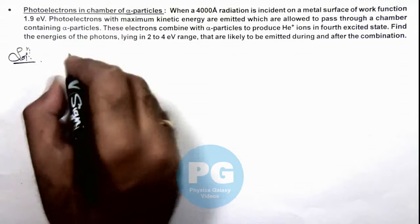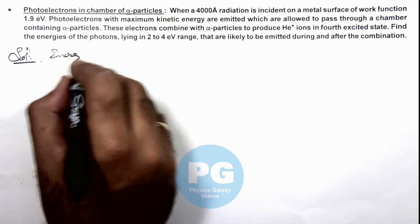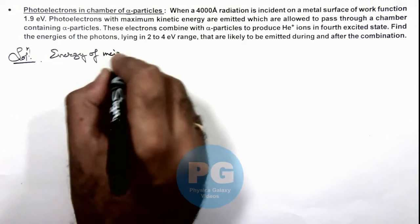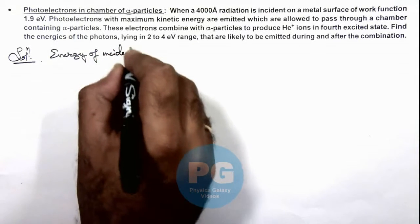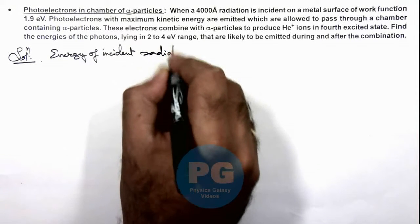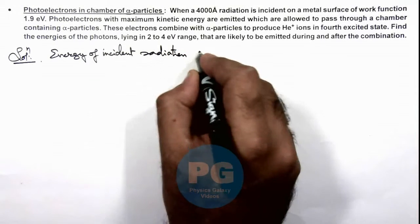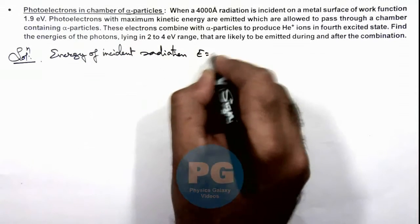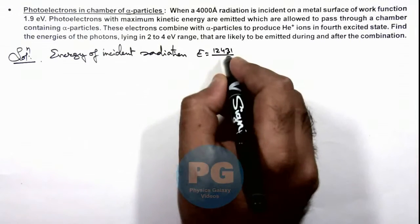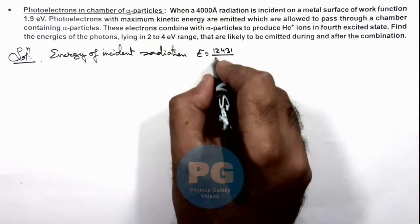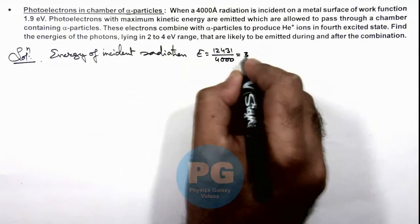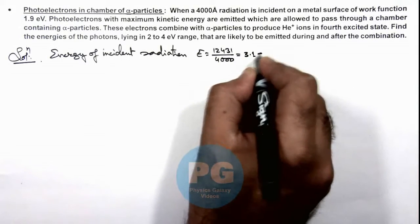In the solution, we first calculate the energy of the incident radiation. This is given as E = 12431 divided by the radiation wavelength, which is 4000 angstroms. So this is 3.1 electron volt.